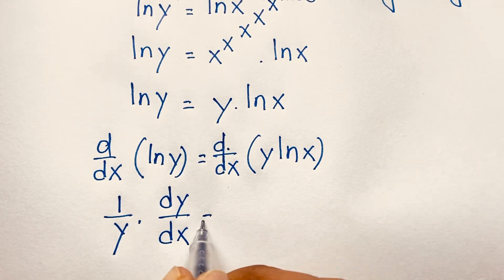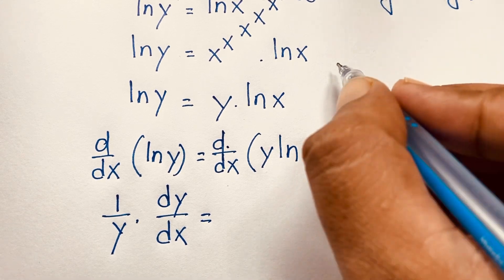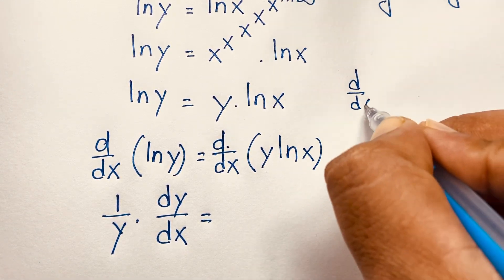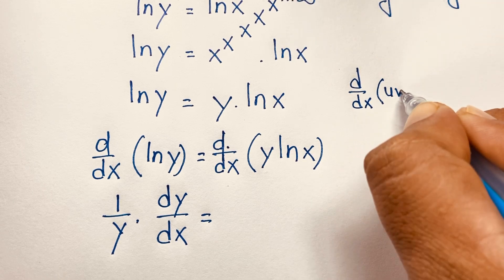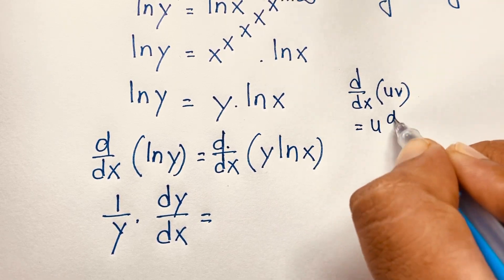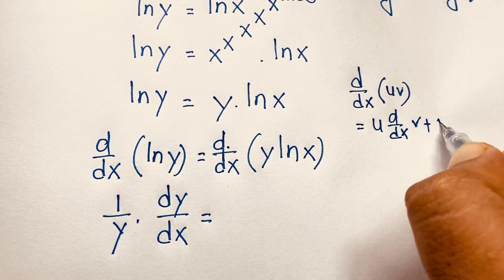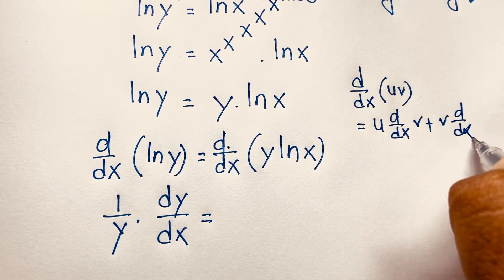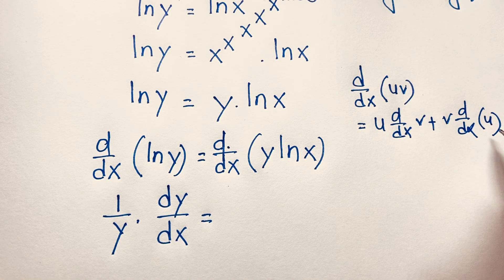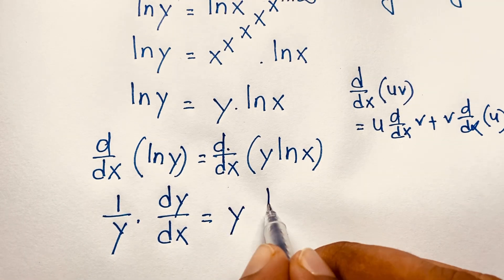On the right side, y times ln x is a product of two functions, so we apply the product rule: u times d/dx of v, plus v times d/dx of u. Applying this product rule formula, we differentiate the right-hand side accordingly.